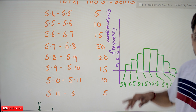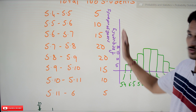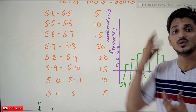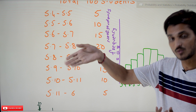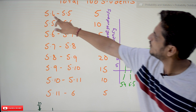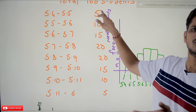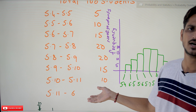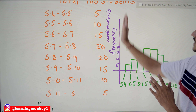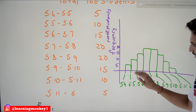Frequency of the students — you can also take probability values on the y-axis; both are equivalent. This is the point we discussed when we talked about probability distribution functions. For example, 5.4 to 5.5 has 5 students. If you convert that to probability: 5 divided by 100 total students equals 0.05, so on the y-axis you can plot 0.05.